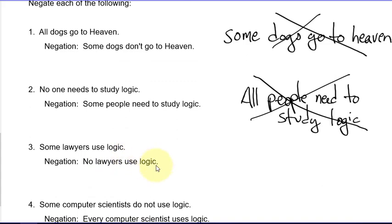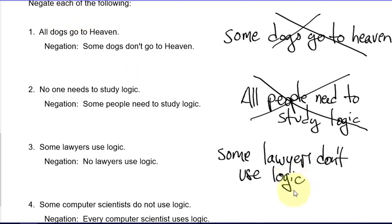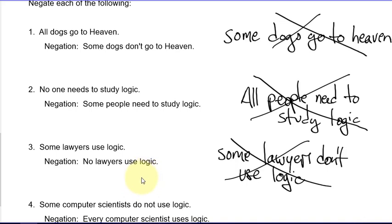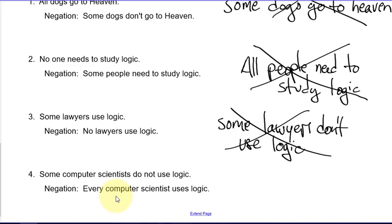For 'some lawyers use logic,' it would be incorrect to say 'some lawyers don't use logic' as the negation — that might be true, but it's not the right answer. Both could be true simultaneously: some lawyers use logic and some don't. They don't contradict each other. The correct negation is 'no lawyers use logic.' For 'some computer scientists do not use logic,' saying 'some computer scientists do' as the negation is incorrect — they could both be true. The correct answer is 'all computer scientists use logic' or 'every computer scientist uses logic.'